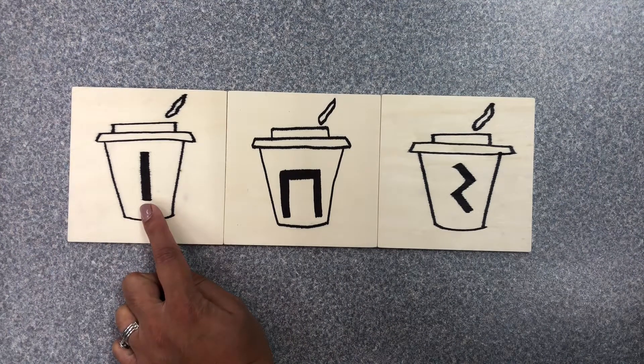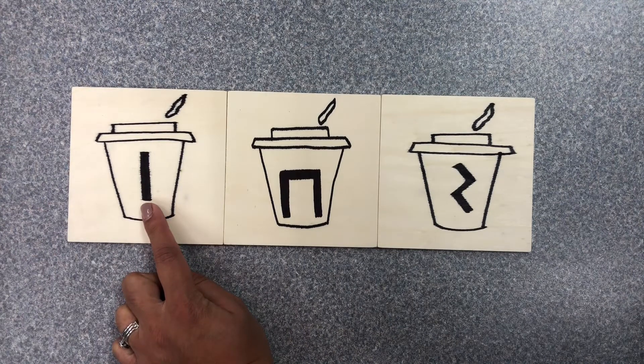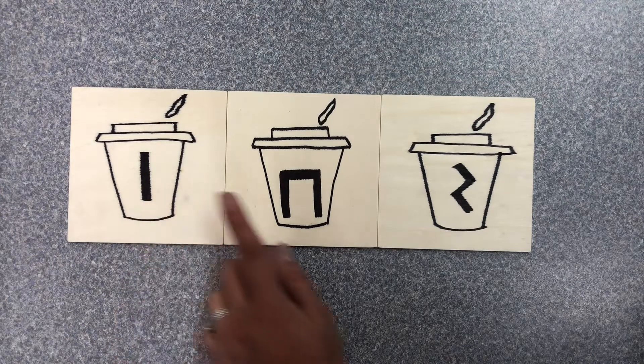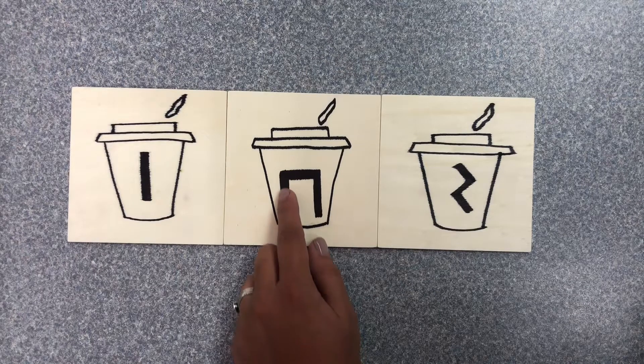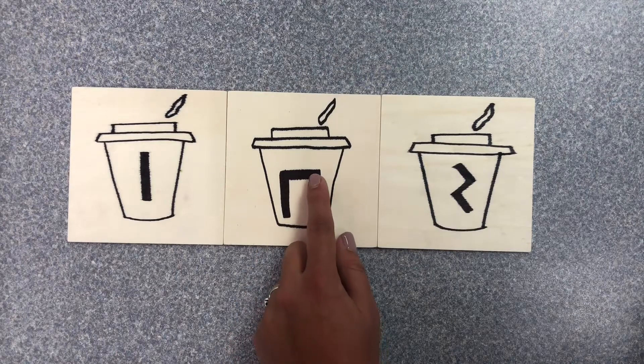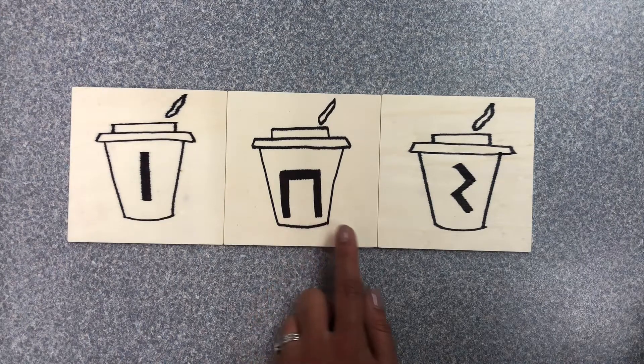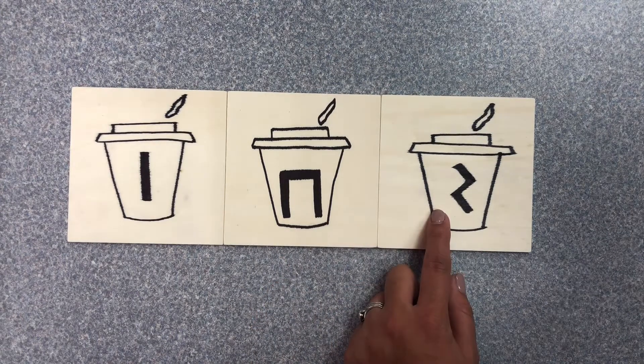So let's take a minute and see if we can remember what we call this straight line up and down. Hopefully you said ta. All right, now this looks like two lines, two of those ta's, but it has a bridge at the top. Do you remember what we call this? This is t-t.